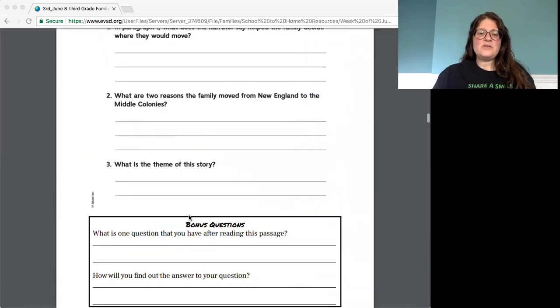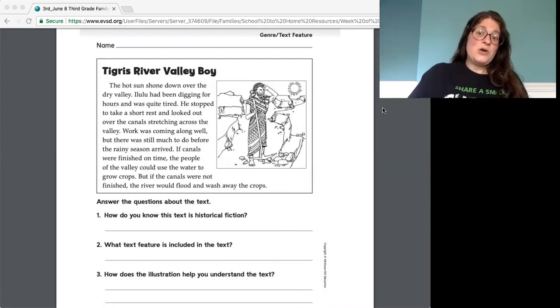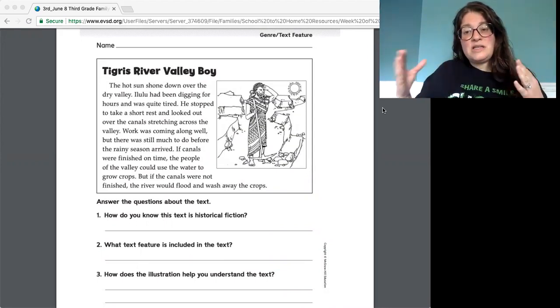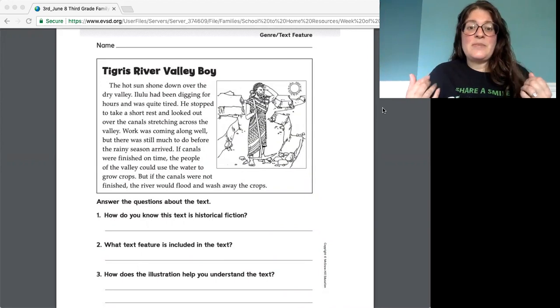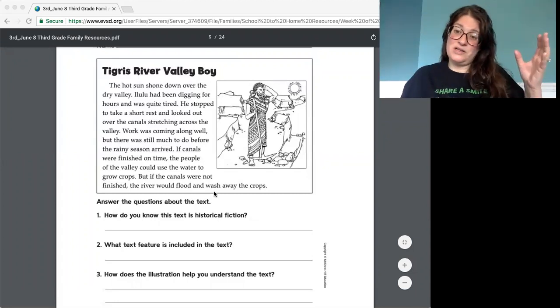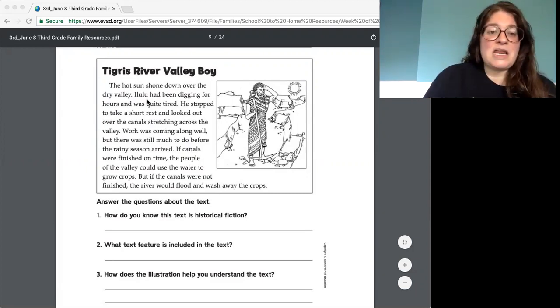Okay next we're gonna focus on historical fiction. Historical fiction just means a story that is about something that happened that could have happened based on a real event in history. They've just changed some of the details so it's a fiction, a made-up story. So we're gonna read this Tigris River Valley Boy and we're gonna try to figure out if we can find out how we know it's historical fiction. So something that happened that was real in history but some of the details have been changed to make it fiction, made-up.